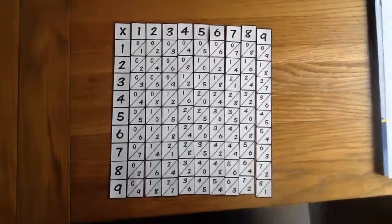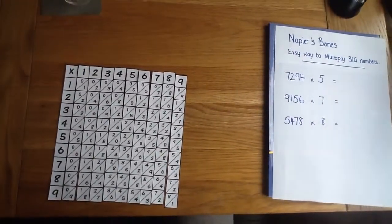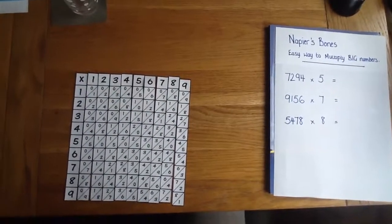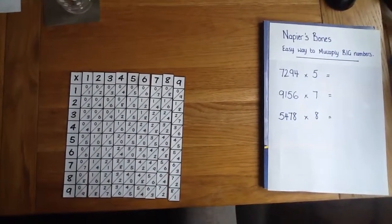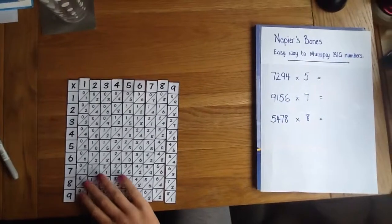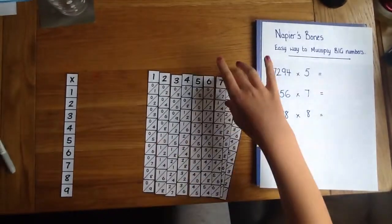We're just going to start off with the first sum. So the first sum was 7, 2, 9, 4 times 5. So Cyan if you could move them around to how they're supposed to be.